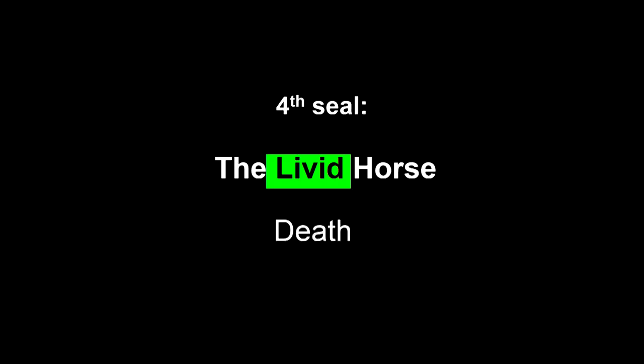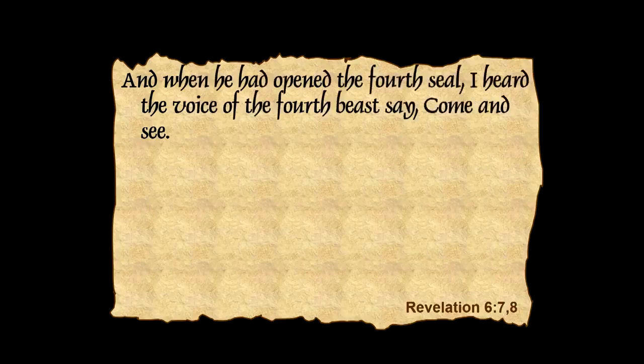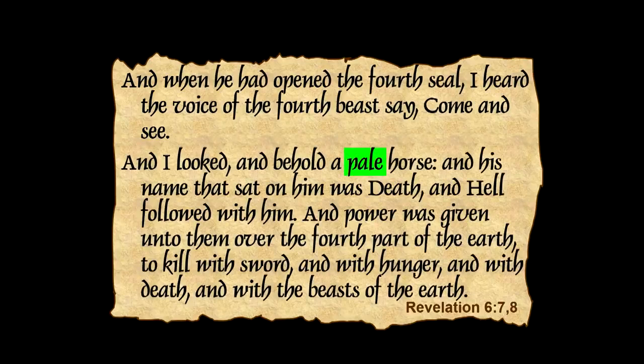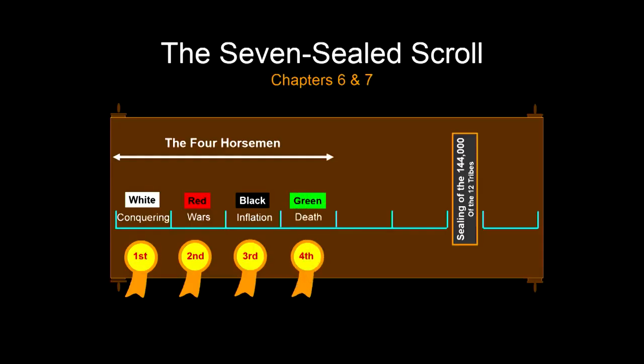There's one horseman left — the fourth seal, the pale horse of death. Chloros is the Greek word — a pale or green horse. His name that sat on him was Death, and Hell followed after him. Power was given unto them over the fourth part of the earth, to kill with the sword, with hunger, with death, and with the beasts of the earth — which may not be four-footed creatures but possibly microscopic ones. Those are the famous four horsemen.